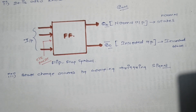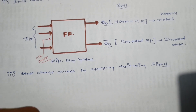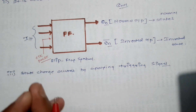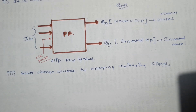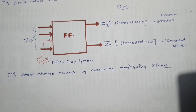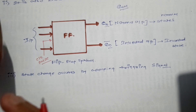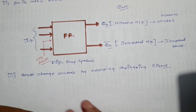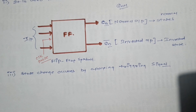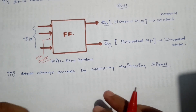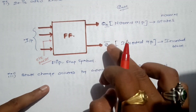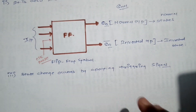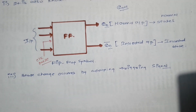There are two types of triggering: positive triggering or negative triggering, also called positive level or negative level triggering — low level and high level triggering. We will see those details later. For now, the key point is that the state change occurs when we apply the triggering signal.